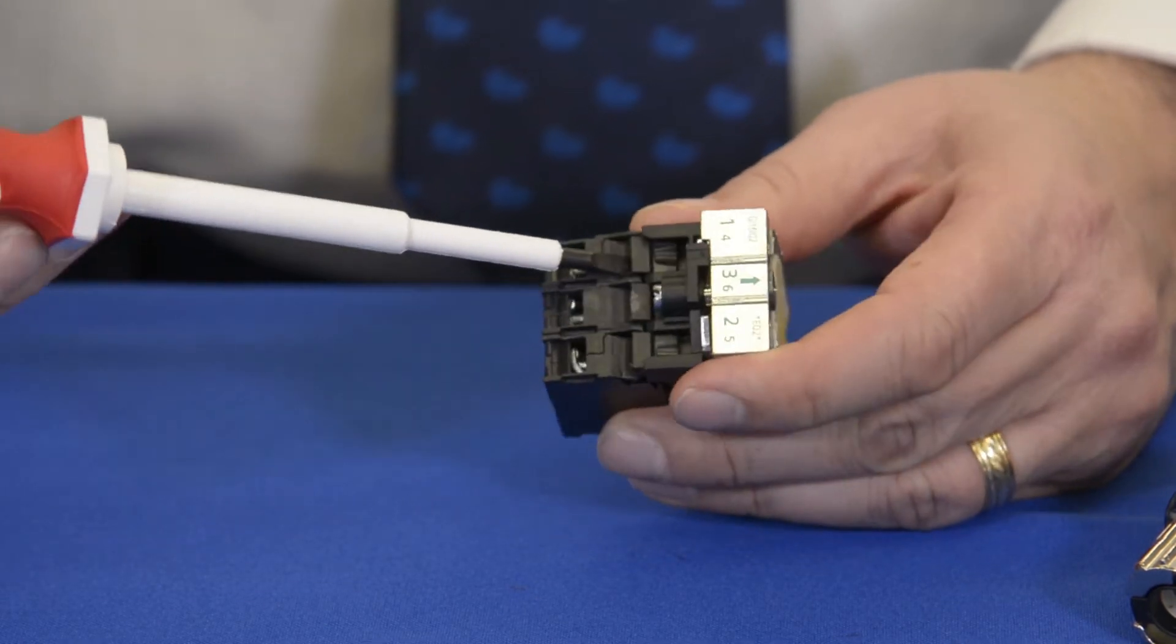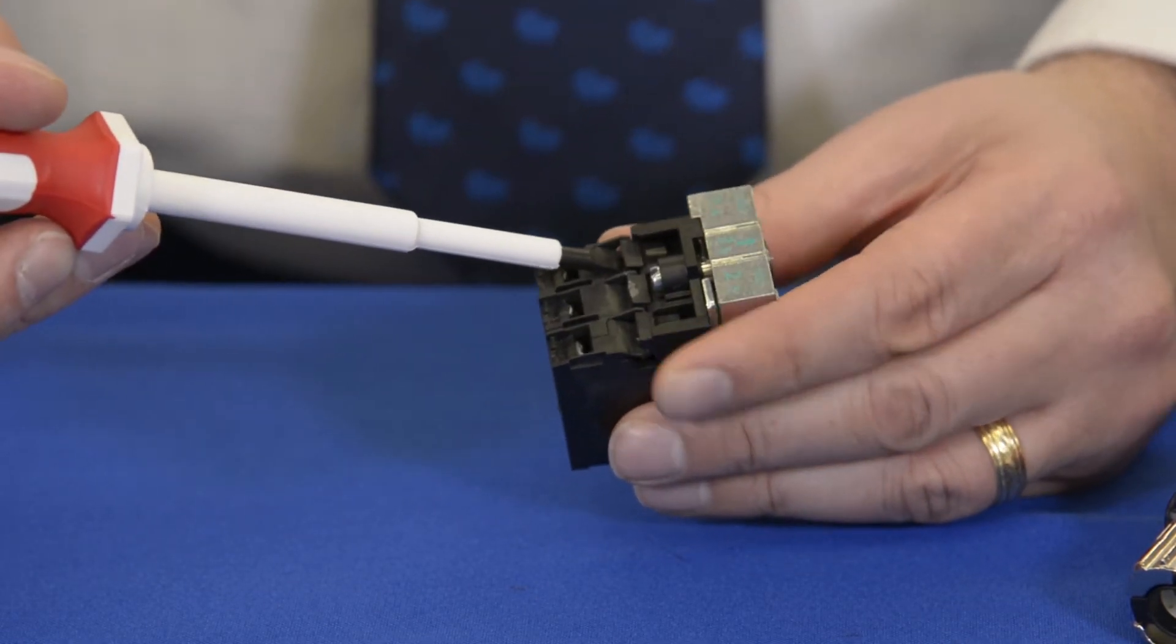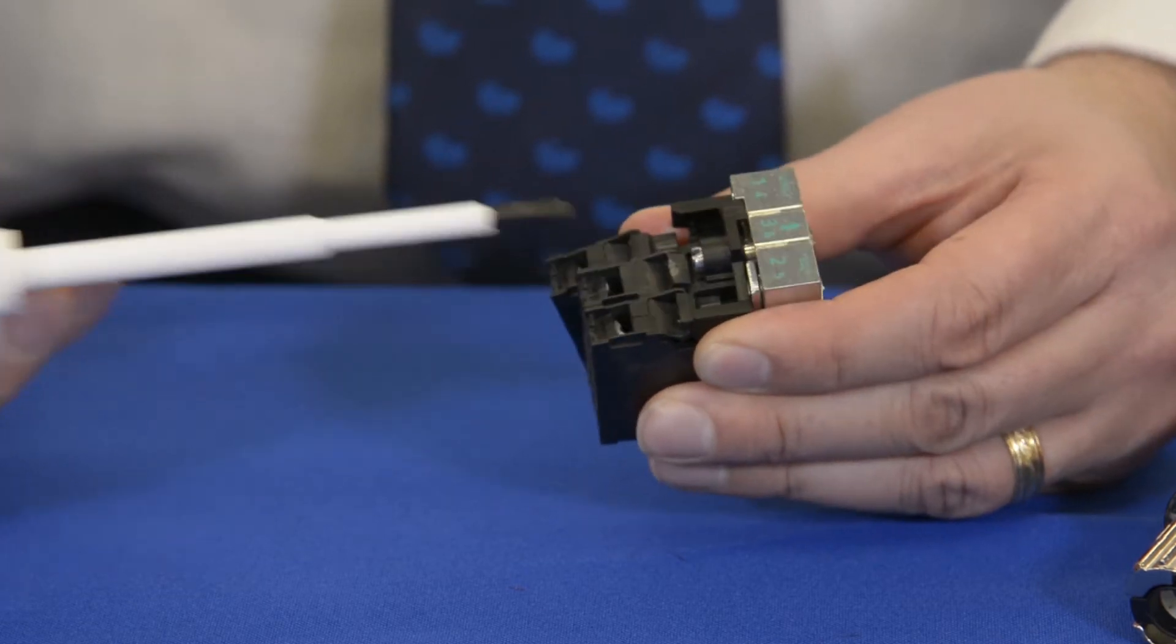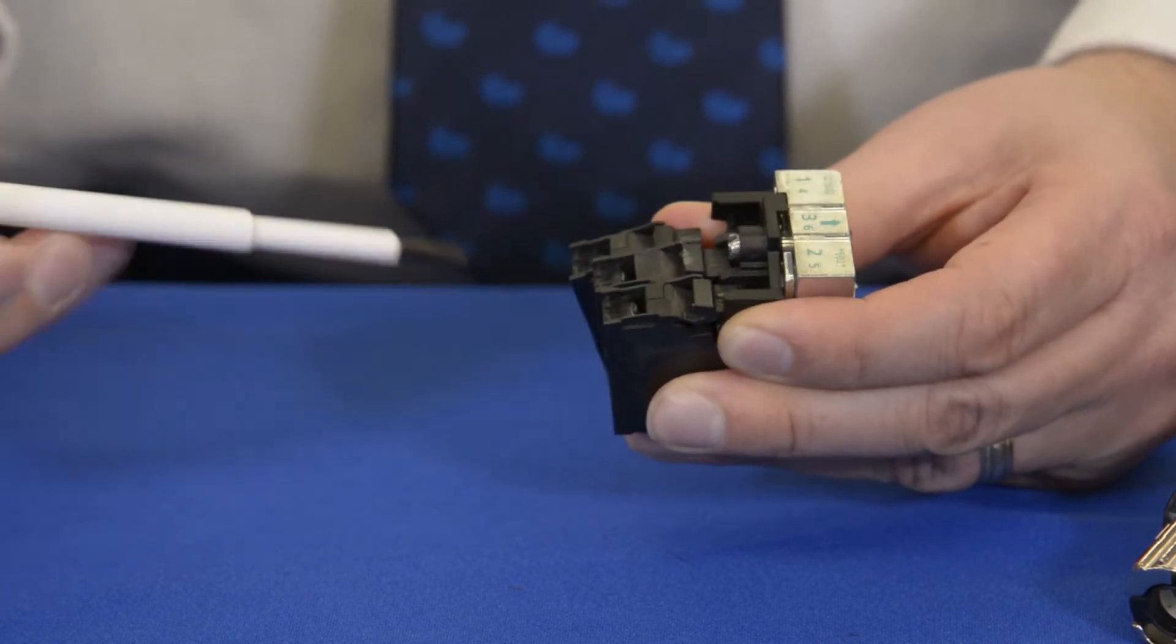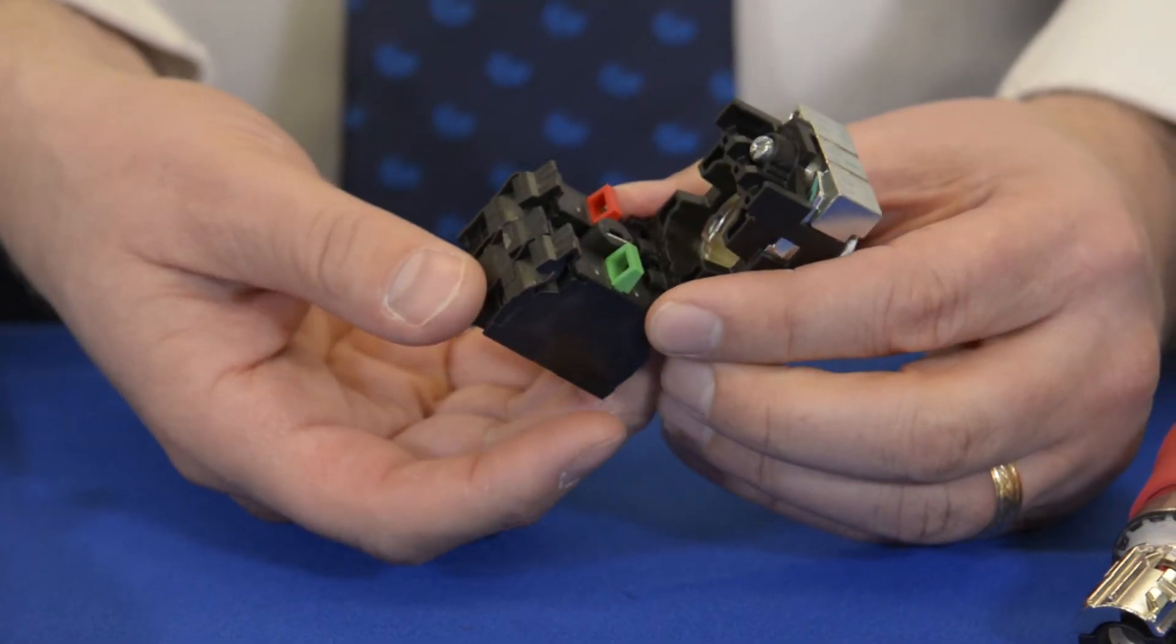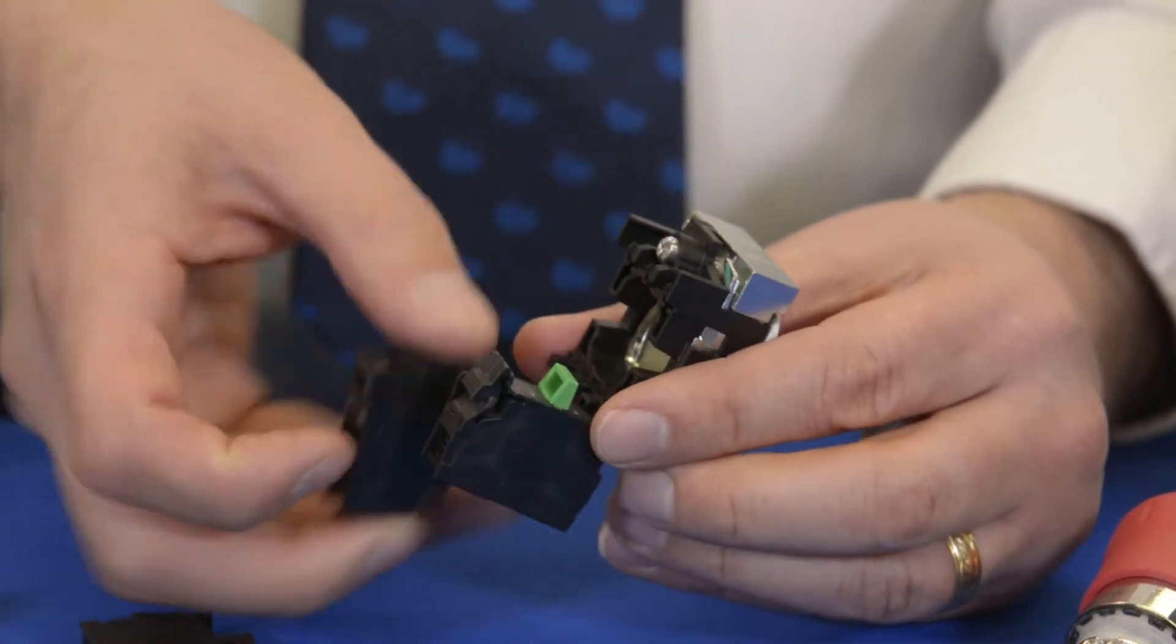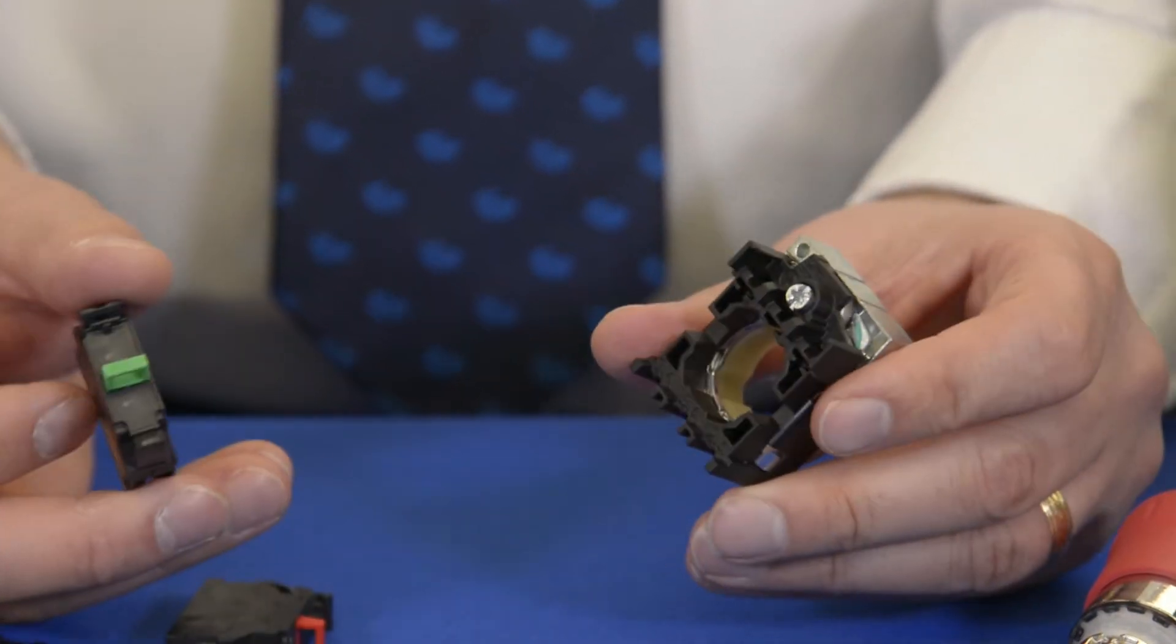To easily remove them, insert a screwdriver into this notch, just a standard flathead will do. You'll lift up and apply just a little bit of pressure and these contact blocks and LEDs can easily be removed from the bottom of the latch mechanism.